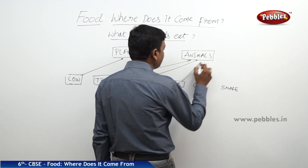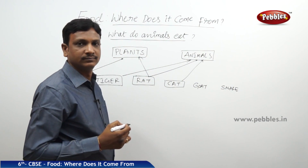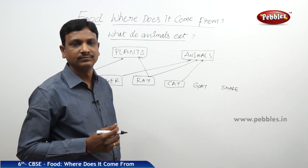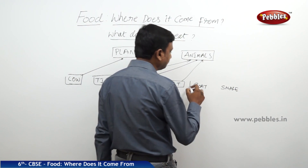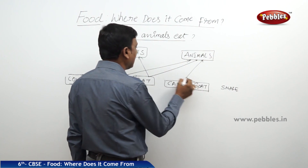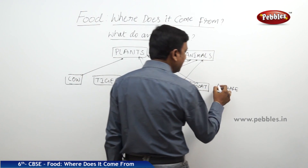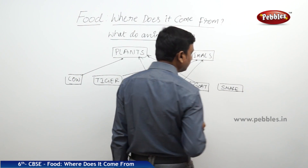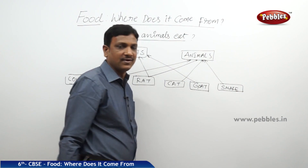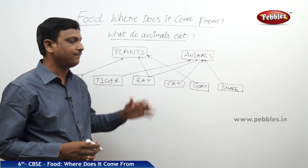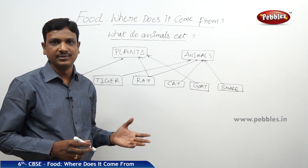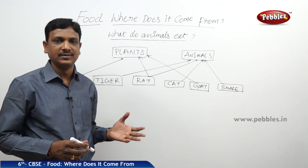The cat drinks milk and eats other small birds. The goat eats only grass and leaves. A snake eats other small animals. Likewise, animals have their food choices — they eat either plant or animal foods.